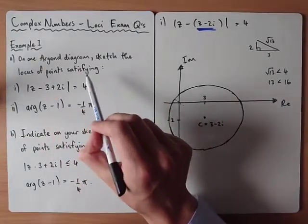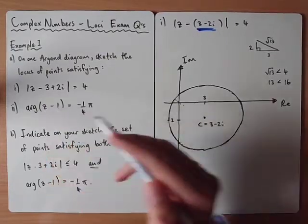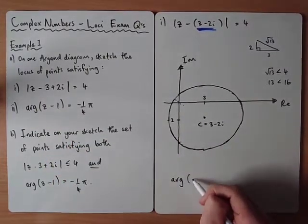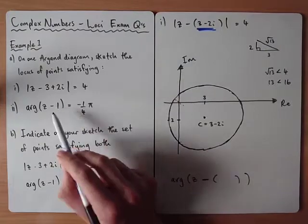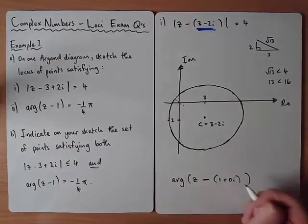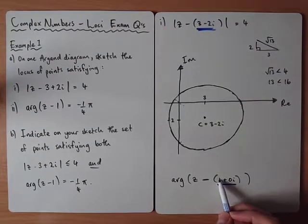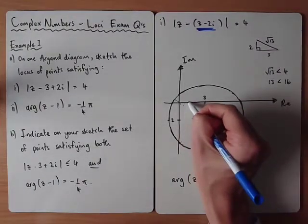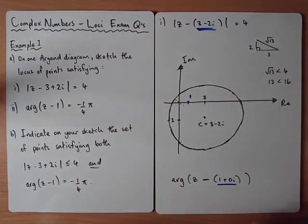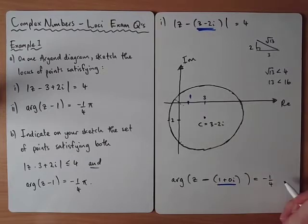On the same Argand diagram we also need to sketch the argument locus. When you get an argument it's a half line. The argument of z minus 1: inside that bracket if it's minus 1 it would be 1 plus 0i, so the half line is going to be measured from the point 1 on the real axis, 0 on the imaginary axis. The argument is equal to minus pi over 4.